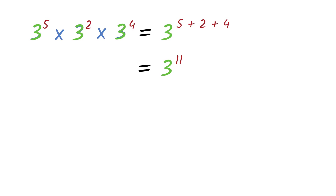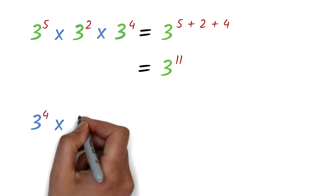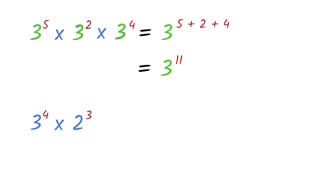Note that this rule only applies when the bases are the same. If you have 3 exponent 4 times 2 exponent 3, you cannot use this method because the bases are not the same — one is 3 and the other is 2. Even if the exponents are the same, such as 2 exponent 5 times 3 exponent 5, you still cannot add the exponents. The bases must be the same.